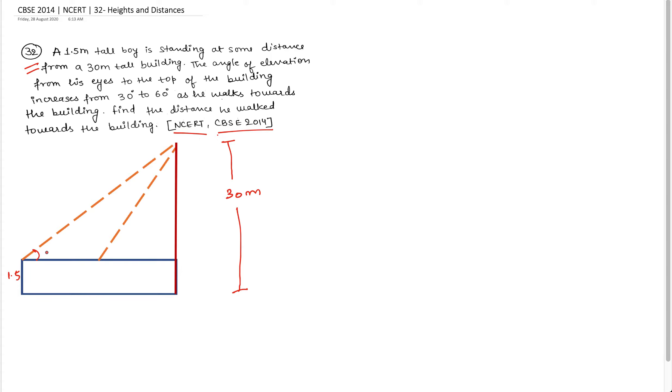So when the boy was standing at the beginning, the angle of elevation was 30 degree to the top of the building. And a little further, the angle was changed by 60 degree. So we have to find out how much distance he traveled.